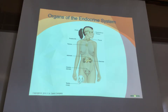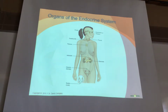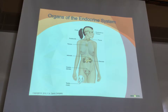Remember when we were learning about the skin, we talked about exocrine glands and endocrine glands. Exocrine glands secrete their substance out onto the surface of something through a duct. Endocrine glands, which we're talking about today, secrete hormones into the bloodstream—not out onto a surface.